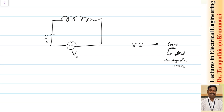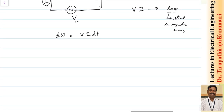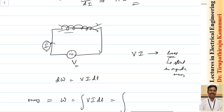The magnetic field produced depends on the value of current at that instant. As the current changes, the magnetic field changes, and the extra magnetic field is stored as energy. In a small time dt, the energy dW = v·i·dt. Neglecting resistance losses, the total energy stored is the integral of v·i·dt.